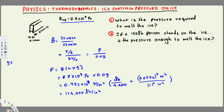Now we have the pressure required to melt the ice. Let's see whether this person creates enough pressure to satisfy that condition. We know pressure equals force over area. Pounds is a unit of force, so we can directly write 150 pounds as our force. The area is the area of the ice skate blade: 25 centimeters by 0.1 millimeters.